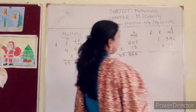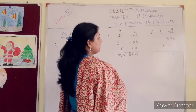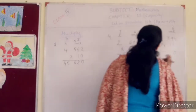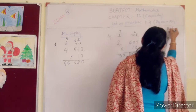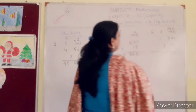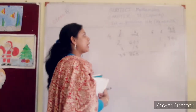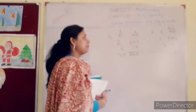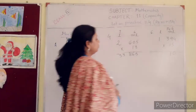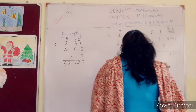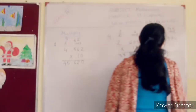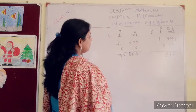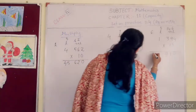15 into 9 is 135. 135 plus 6 is 141. 14 is in your hand. 15 into 3 is 45. 45 plus 14 is 59. 5 is in your hand. 15 into 1 is 15 plus 5 is 20.